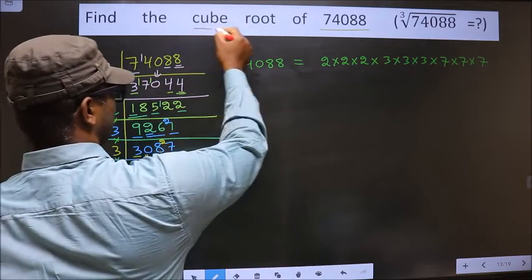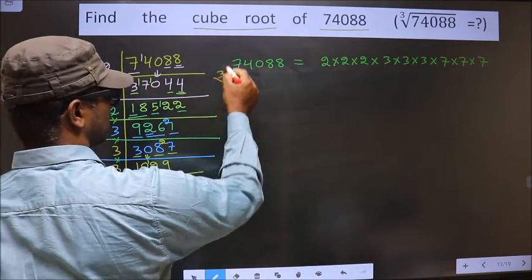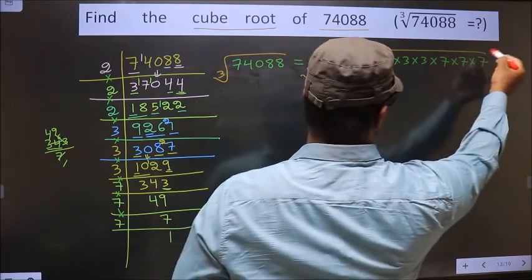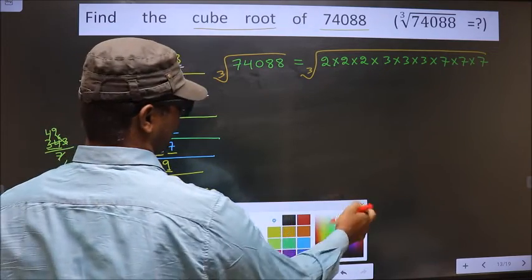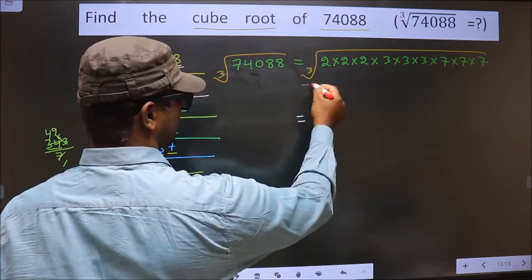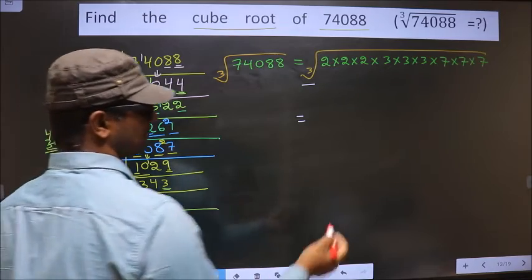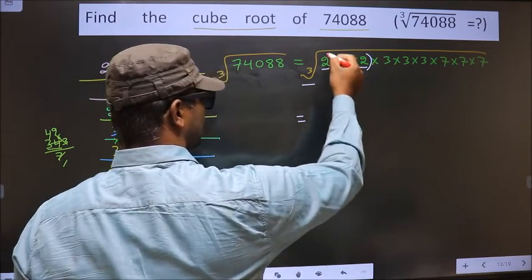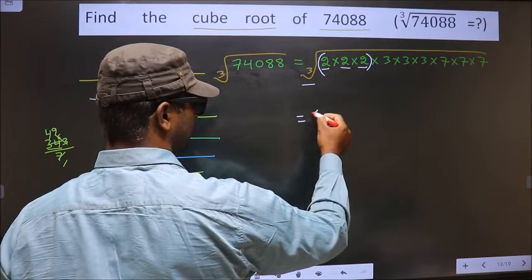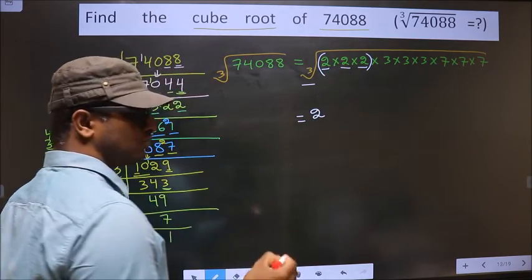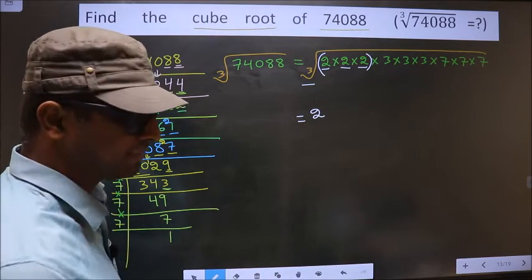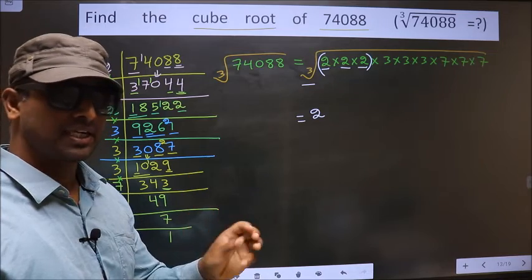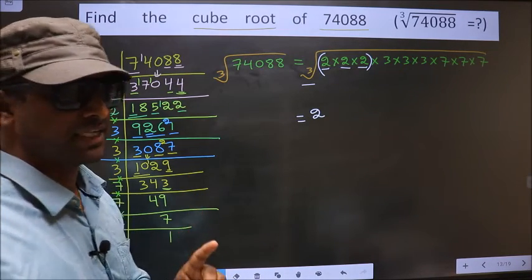Here we have to find the cube root, so we take the cube root on both sides. For the cube root, we have a property: whenever a number is present 3 times inside the cube root, that number will come out of the cube root and will be written only once. Number inside the cube root present 3 times — it comes out and is written only once.